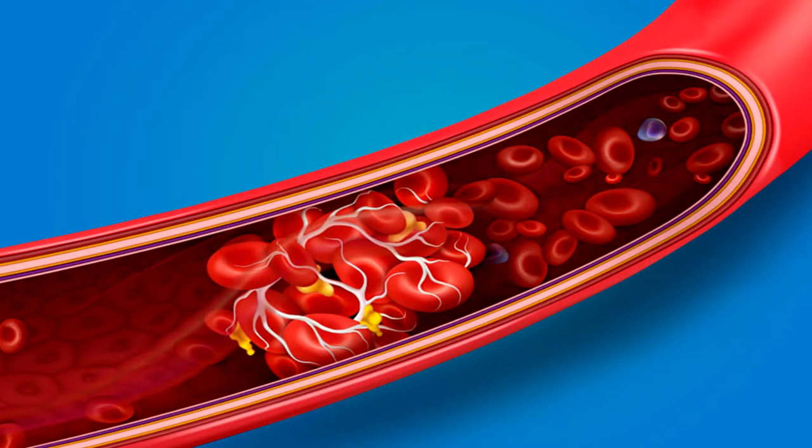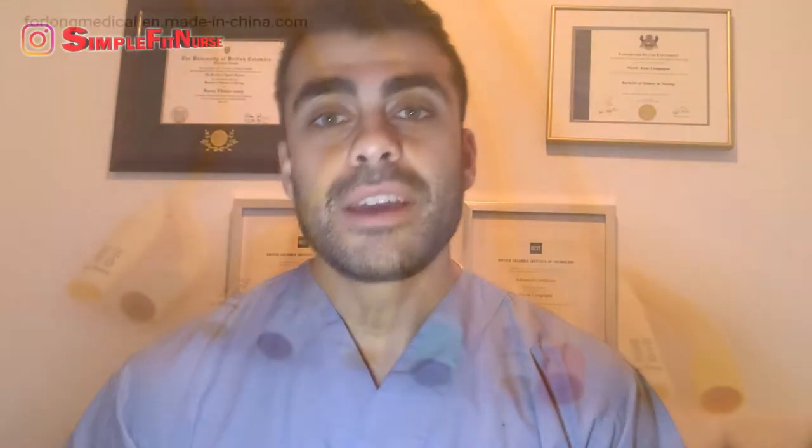Number two: when removing the catheter, look at the catheter tip to identify why there was an occlusion. Look for sediments again, or sometimes blood clots even. Number three: utilize a bigger catheter size. The bigger the catheter, the more likely it will drain, as there is more surface area that the urine can go through and it is less likely to occlude again.